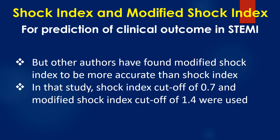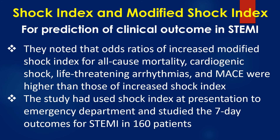Other authors have found modified shock index to be more accurate than shock index. In that study, a shock index cutoff of 0.7 and modified shock index cutoff of 1.4 were used. They noted that the odds ratio of increased modified shock index for all-cause mortality, cardiogenic shock, life-threatening arrhythmias, and MACE were higher than those of increased shock index. The study used shock index at presentation to the emergency department and studied 7-day outcomes for STEMI in 160 patients.